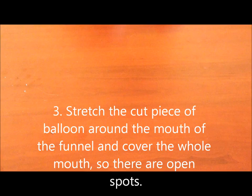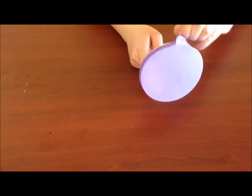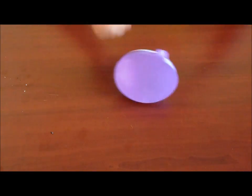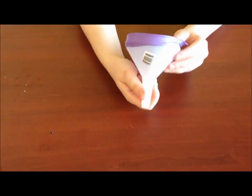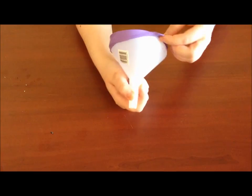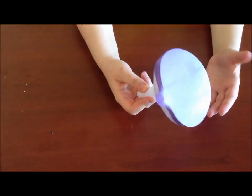Now, this part is kind of hard, so we're going to try to stretch the balloon all the way over the funnel. This is one of the most difficult parts. It's covering the entire funnel, otherwise our stethoscope will not work. Make sure all the edges are in and covered because any leakage could make it not work as well.